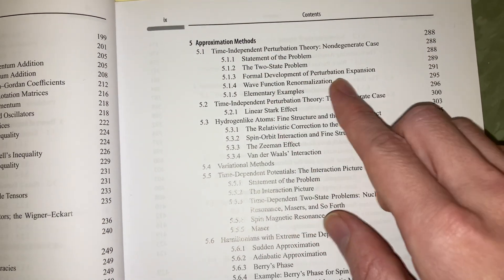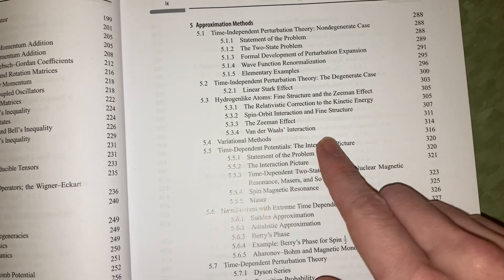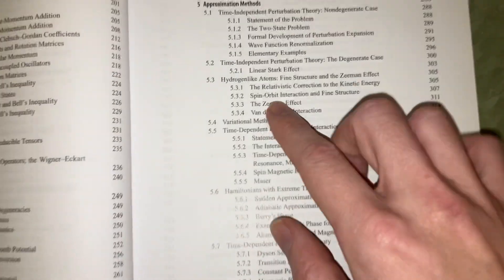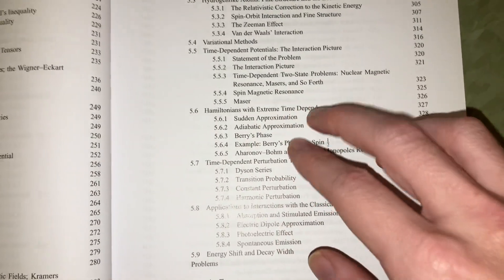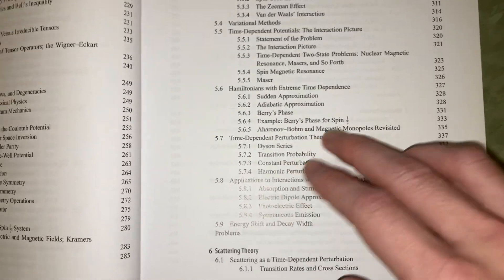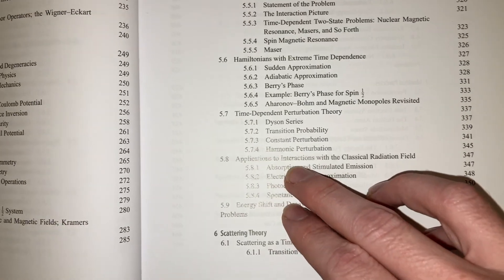Then we have some approximation methods. I don't think I've ever really, I mean, we've approximated some things, like the hydrogen atom, the Zeeman effect, something. I think some approximations that we make are pretty important. Otherwise, we wouldn't be able to solve some of the basic things.